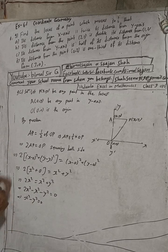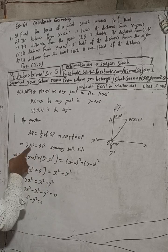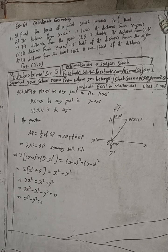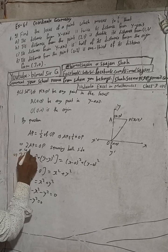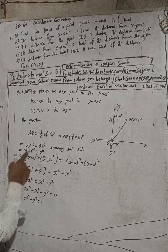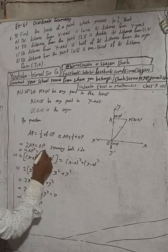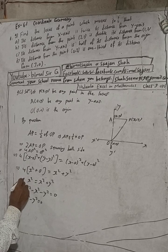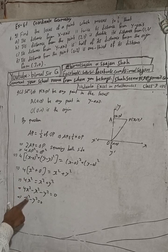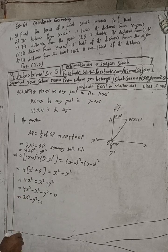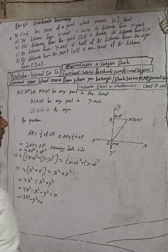I made a mistake. Correcting: squaring both sides of 2·AP = OP gives 4·AP² = OP². So 4x² = x² + y². Therefore 4x² − x² − y² = 0, which gives 3x² − y² = 0. This is the required locus.